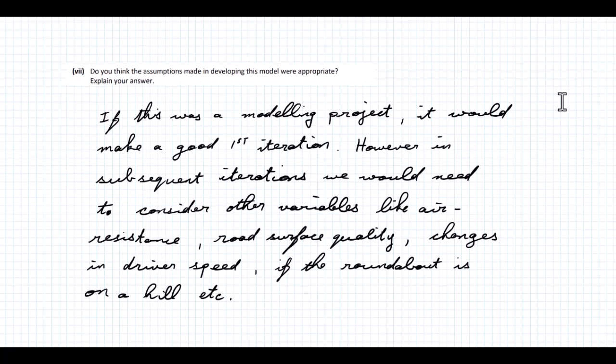Do you think that the assumptions made in developing this model were appropriate? Explain your answer. If this were a modeling project, it would make a good first iteration. However, in subsequent iterations, you would need to consider other variables, like air resistance, road surface quality, maybe changes in the driver's speed, if the roundabout is on a hill and so on. There are probably loads of other different variables you could throw in there, but those are just a few.